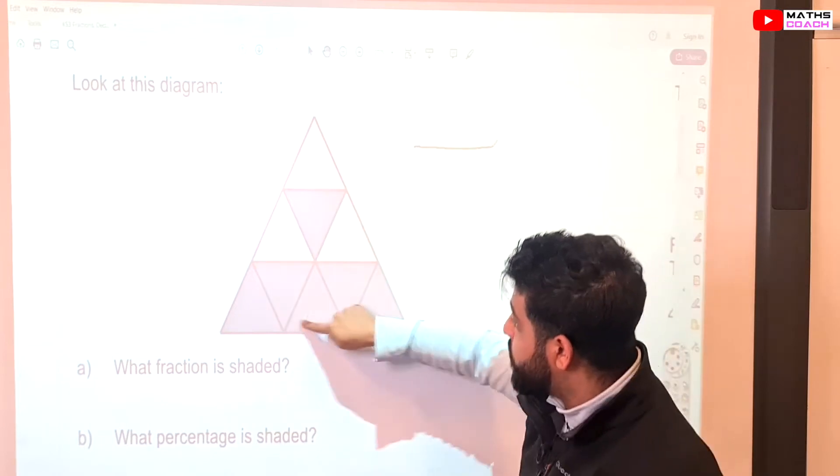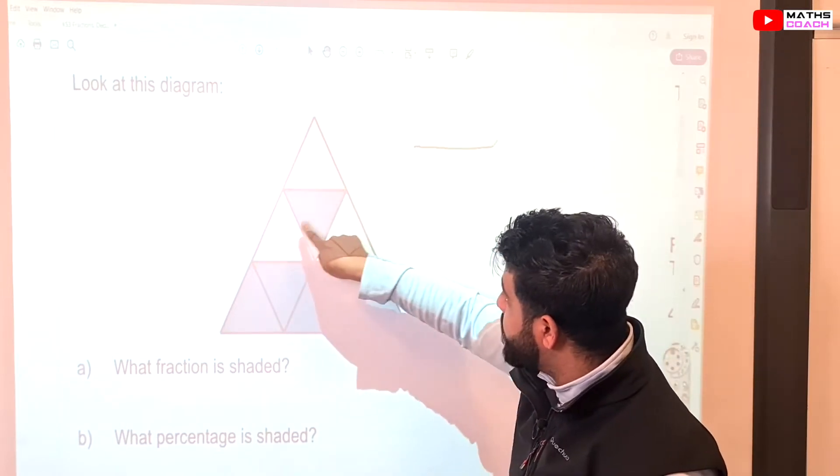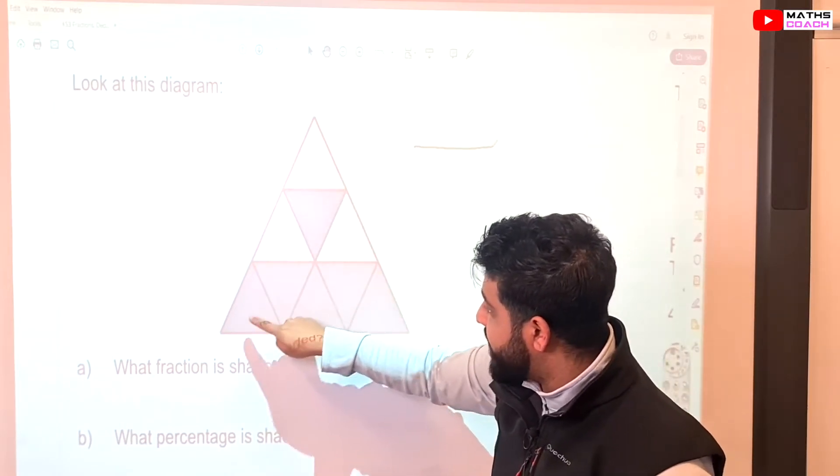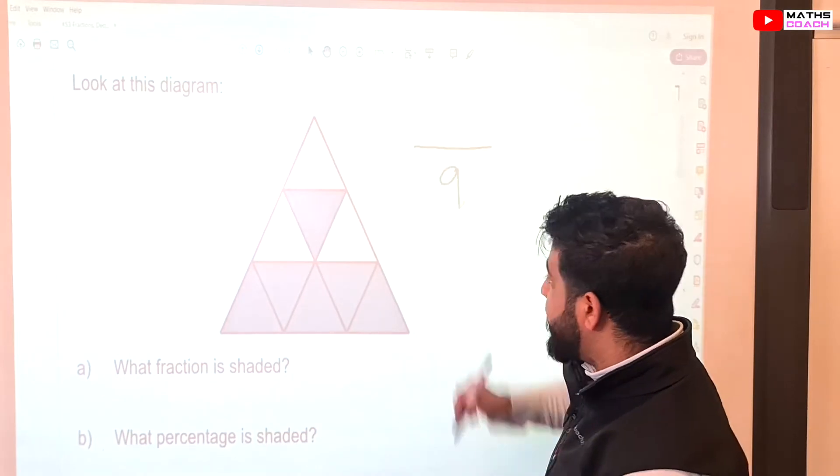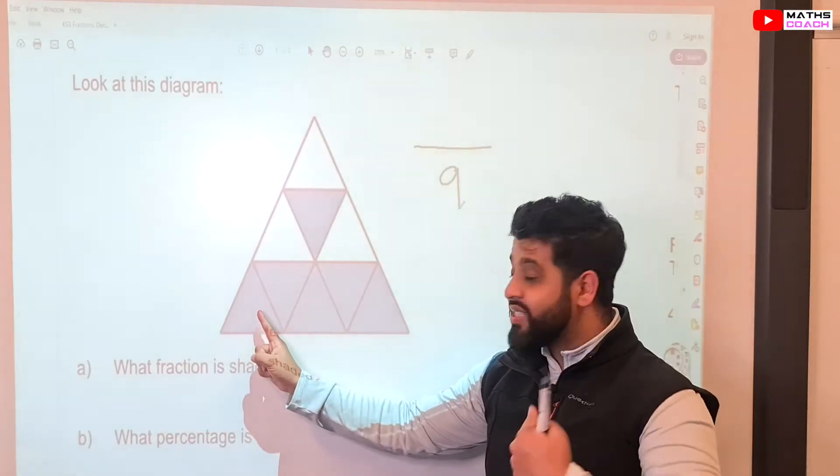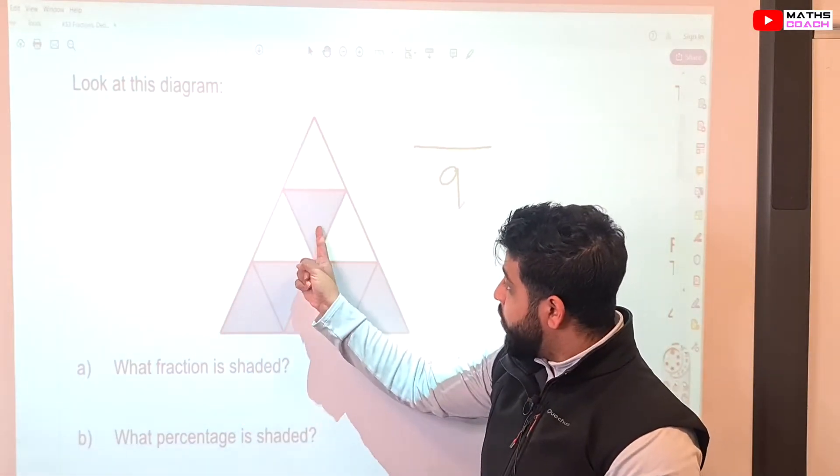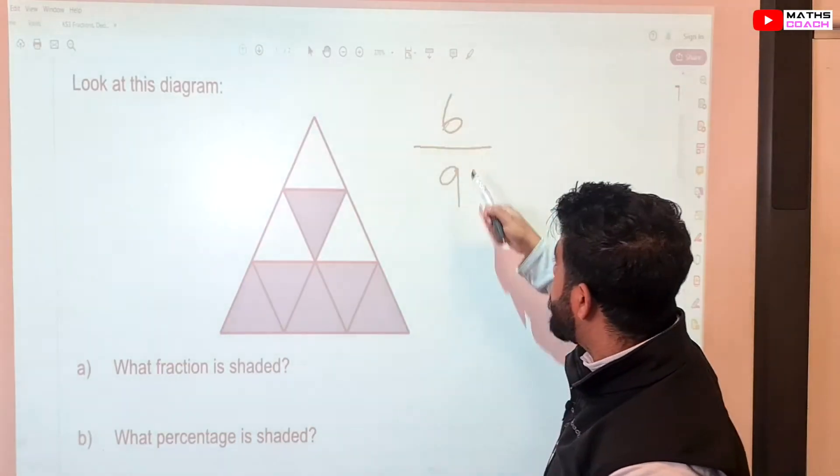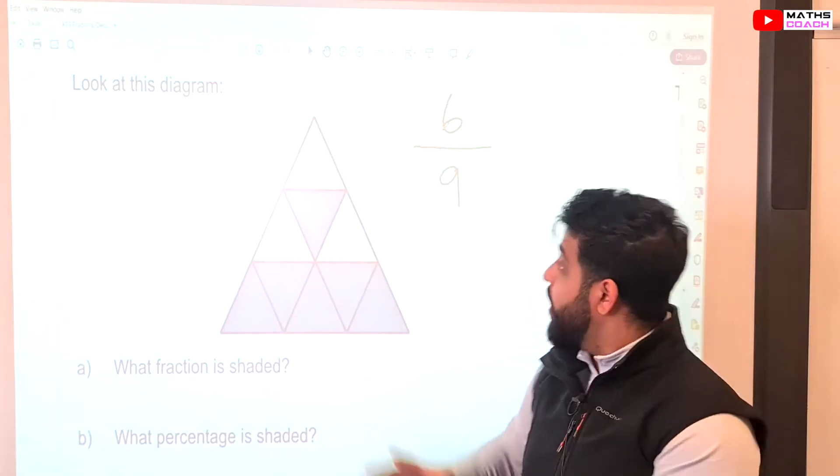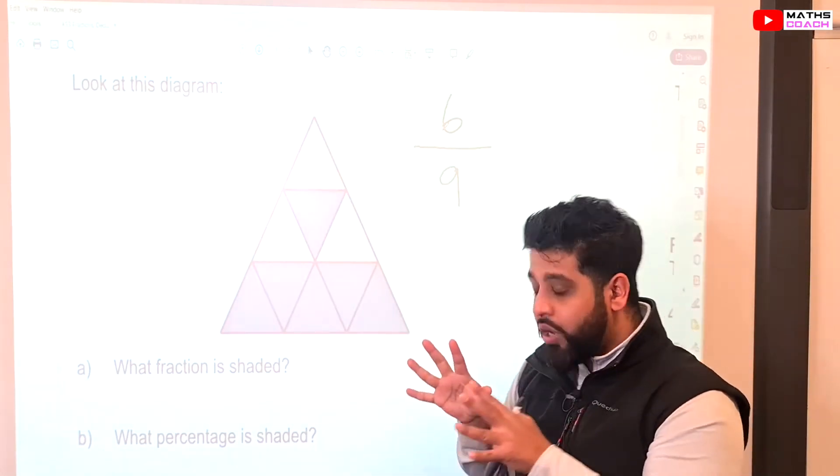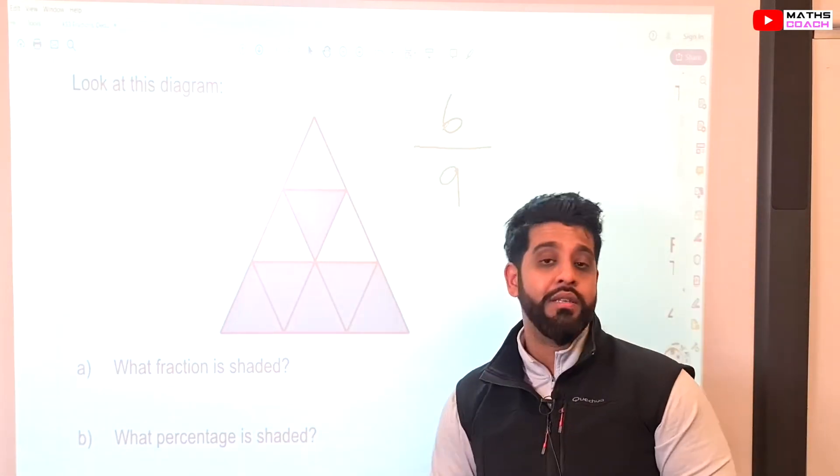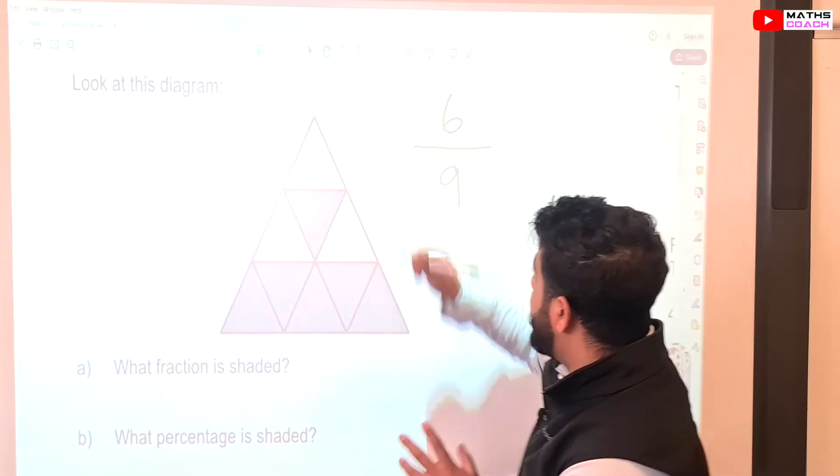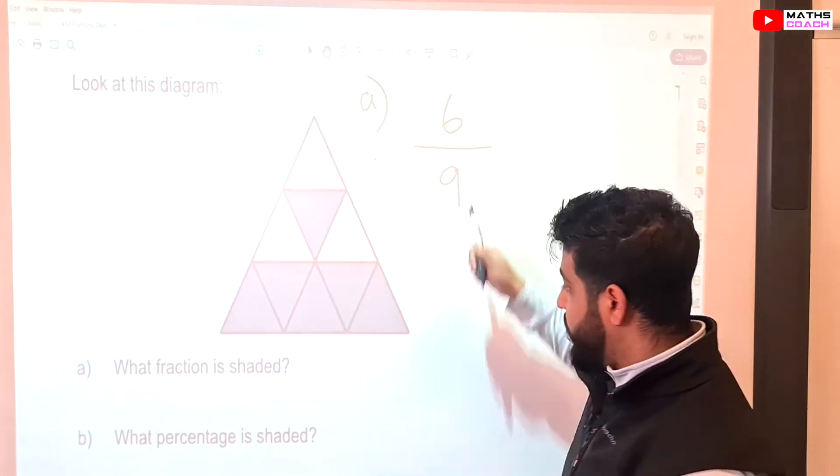Now, our denominator will be the total number. So, let's just give that count: 1, 2, 3, 4, 5, 6, 7, 8, 9. So, our denominator will be 9 and how many parts are shaded. Hopefully, you can see on the camera which parts are shaded. So, we've got 1, 2, 3, 4, 5, 6. So, 6 out of 9 parts are shaded. We can simplify this, but this is not a lesson or a question that's asking us to simplify. So, we can leave our answer for part A as 6 over 9.